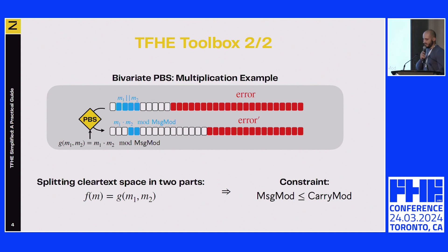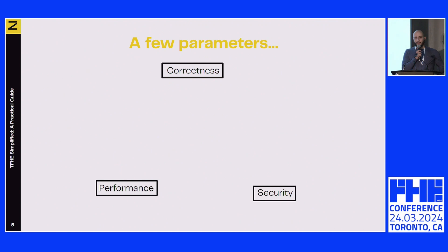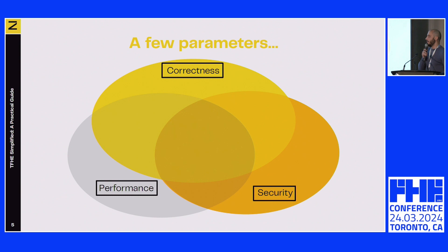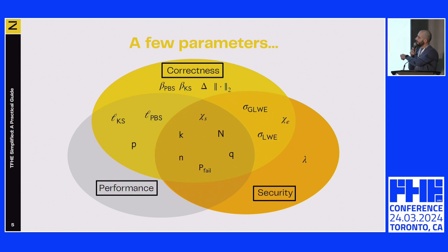For this toolbox to work correctly, we need many things: correctness, security, and good performance. However, verifying everything requires dealing with a lot of parameters, some of which span multiple categories. This is super complicated to work with.